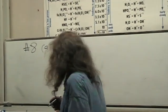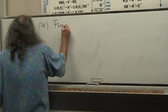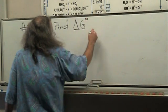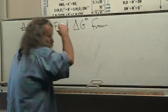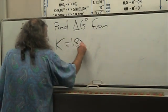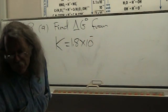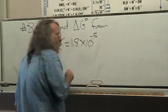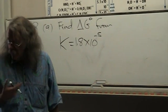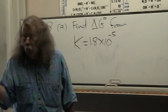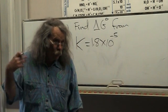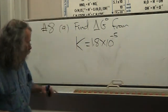We need to find delta G naught for A, where K equals 1.8 times 10 to the minus 5. This just happens to be the Ka for acetic acid and the Kb for ammonia, so that means they both have the same exact free energy formation in water.